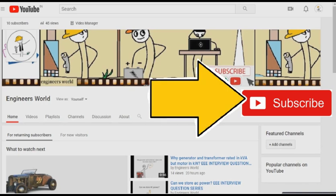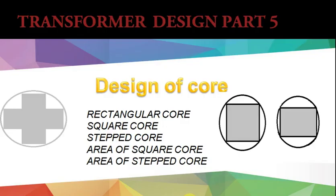For more videos, subscribe to our channel and hit the bell icon. Make sure to tune in to our next video. Transformer Design Part 5: Design of Core. Contents are Rectangular Core, Square Core, Stepped Core, Area of Square Core, and Area of Stepped Core.